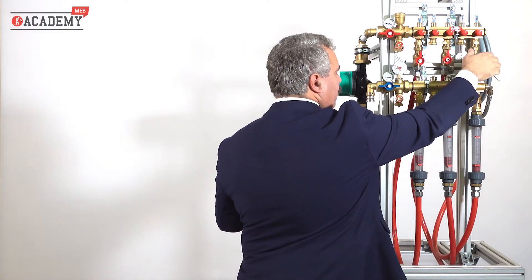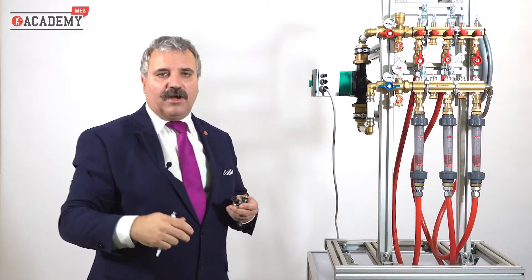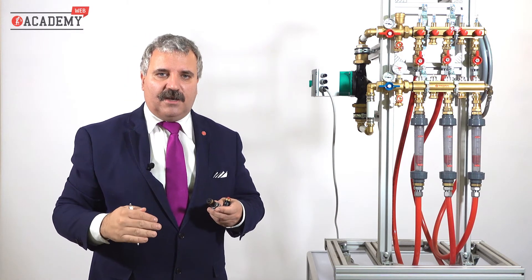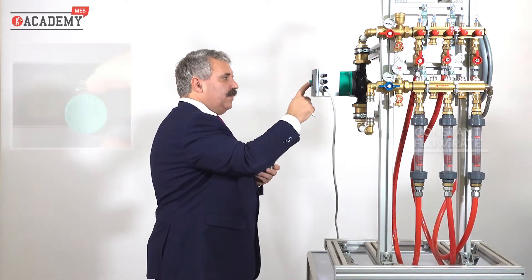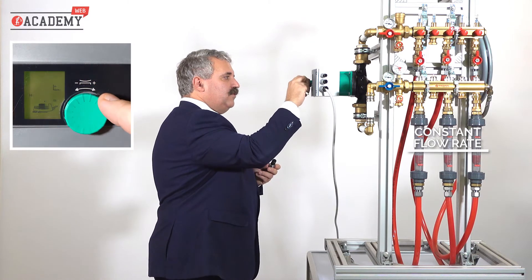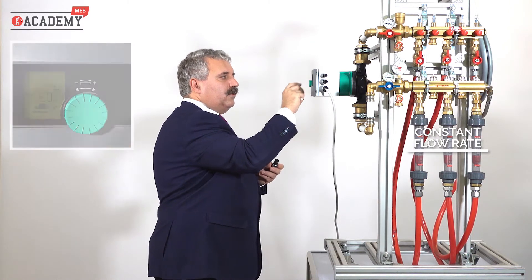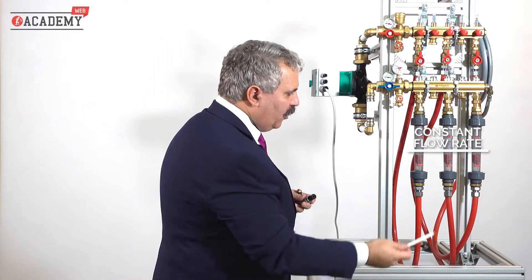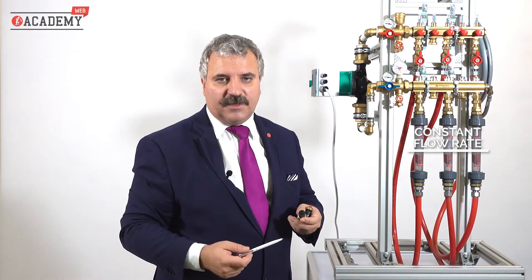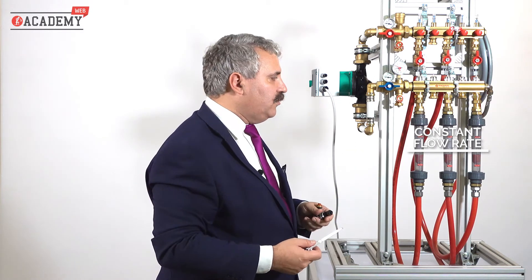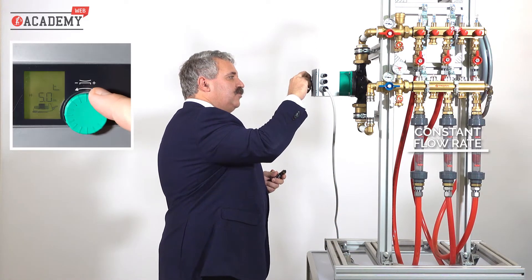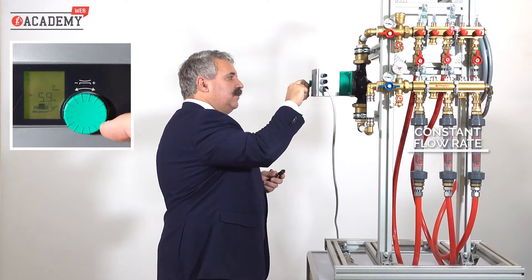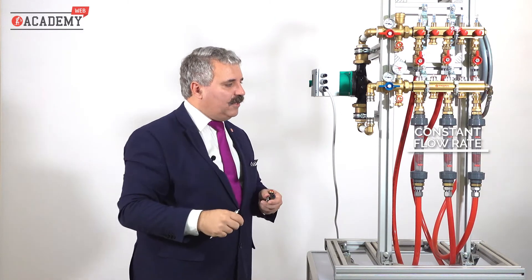Now let's see what happens when we modify the differential pressure. This is what you can experience in an installation with several manifolds or different thermal loads. We increase the differential pressure to 50 kilopascal. As you can see, the cartridges have been able to manage this increase. And finally, let's bring it to the maximum differential pressure, 60 kilopascal. Again, all flow rates remain constant.